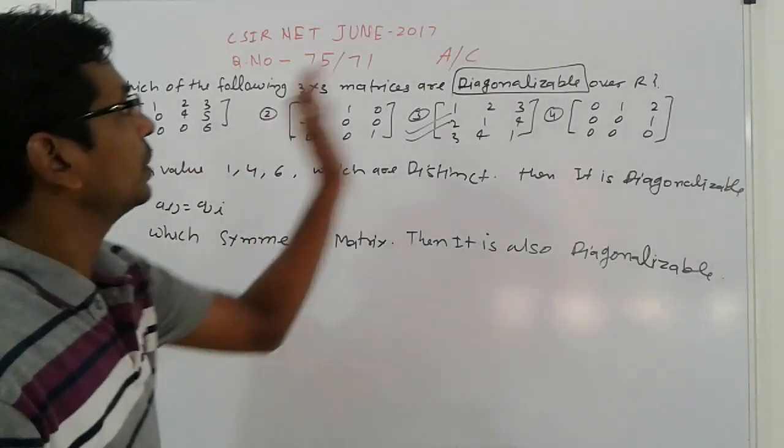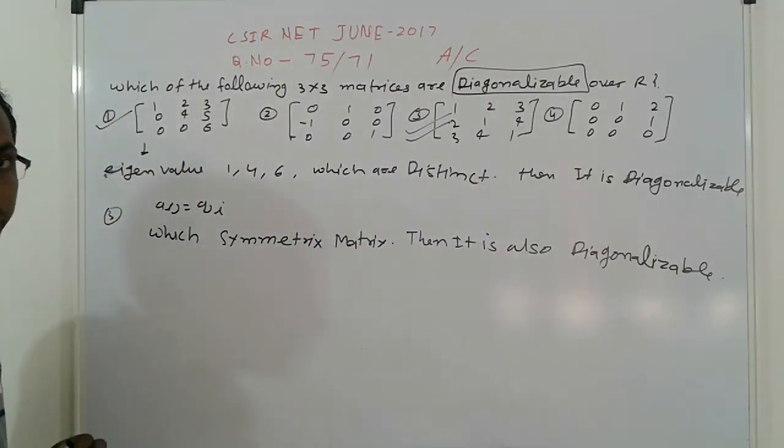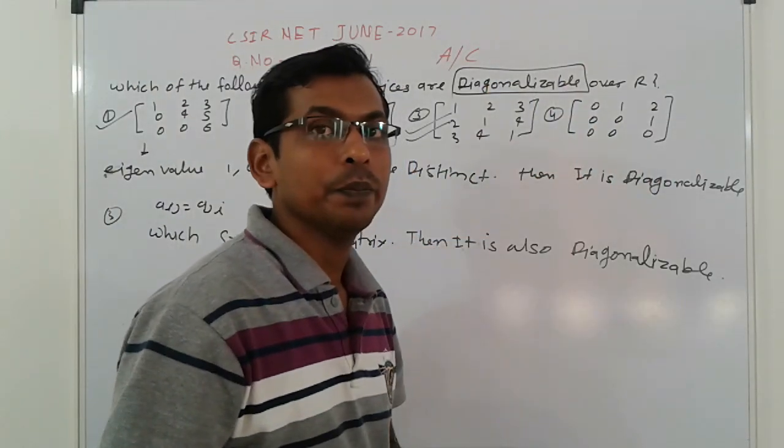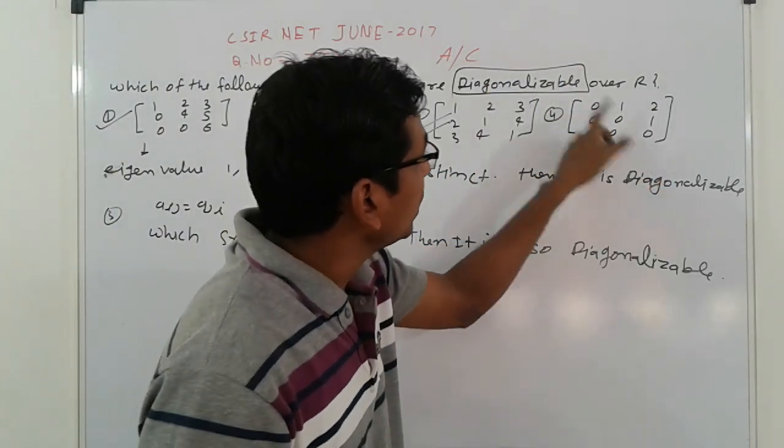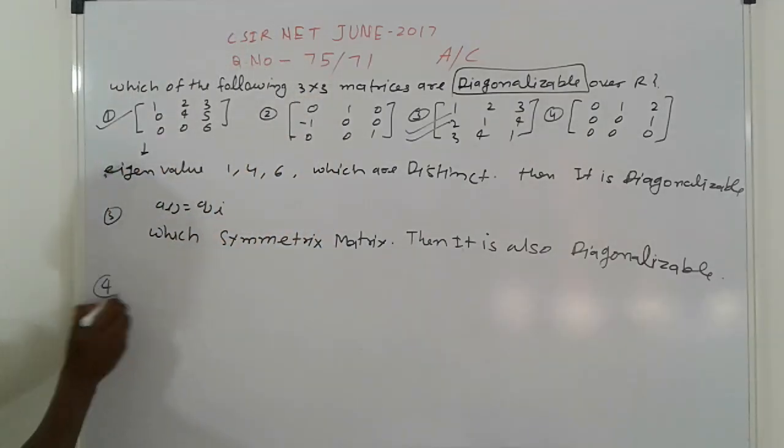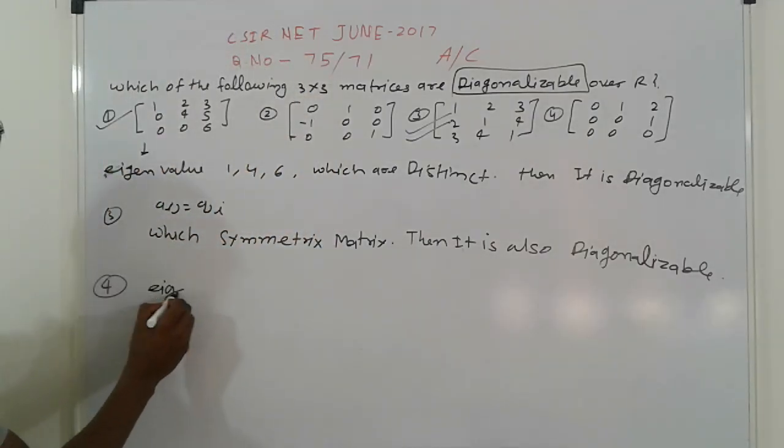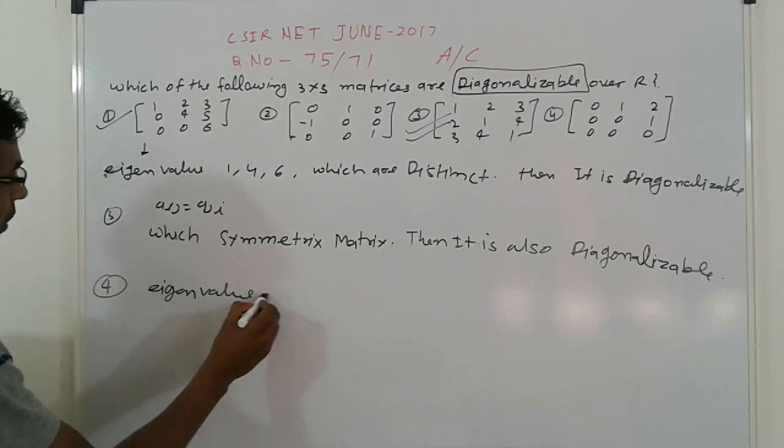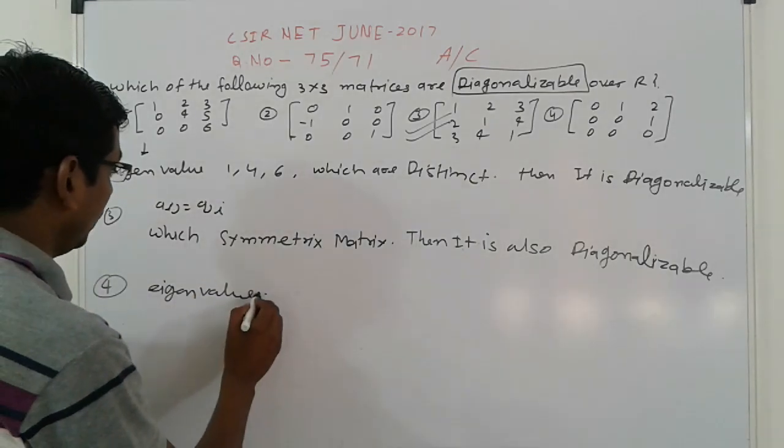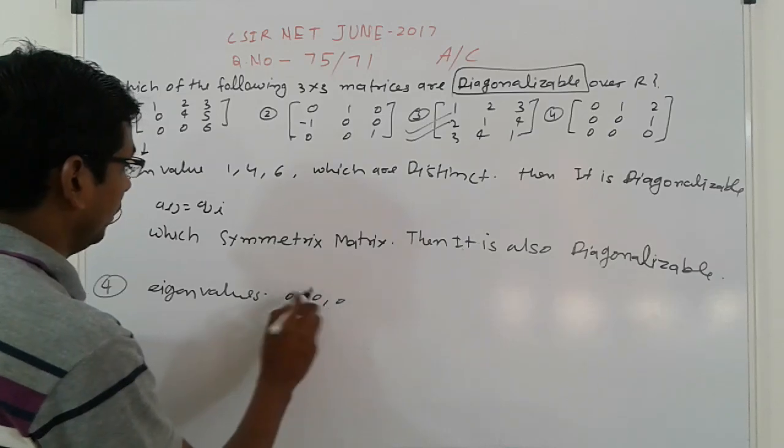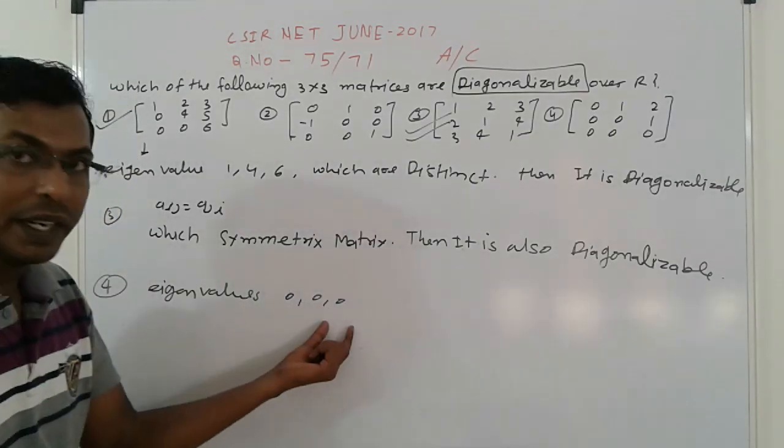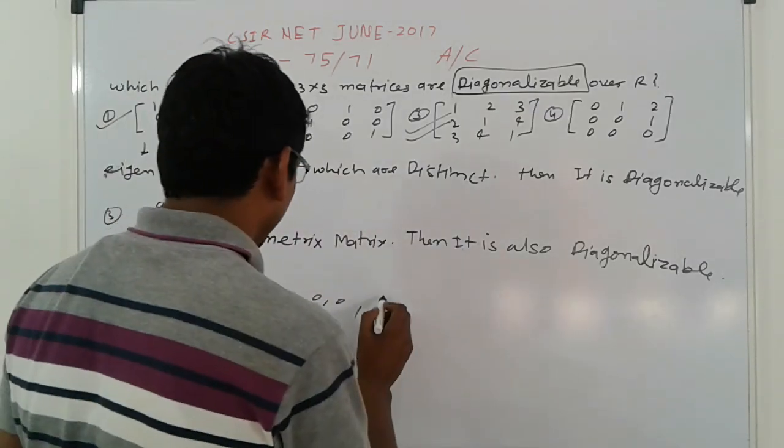Come to the second and fourth. Fourth, what is the eigenvalue? Upper triangular, the eigenvalue is zero. In the fourth option, the eigenvalue is 0, 0, 0, which is repeated and not distinct.